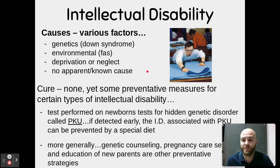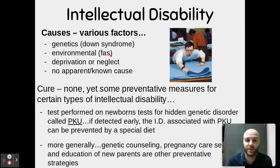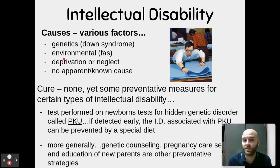Some causes for intellectual disability include genetics — for example, Down syndrome, when you have an extra chromosome. Environmental factors include teratogens that impact fetal development, such as fetal alcohol syndrome, where the mother ingests too much alcohol and it causes physical deformities and intellectual disabilities. Deprivation or neglect, before or after birth, can also lead to issues in development and intellectual disability. Some cases have no apparent or known cause.